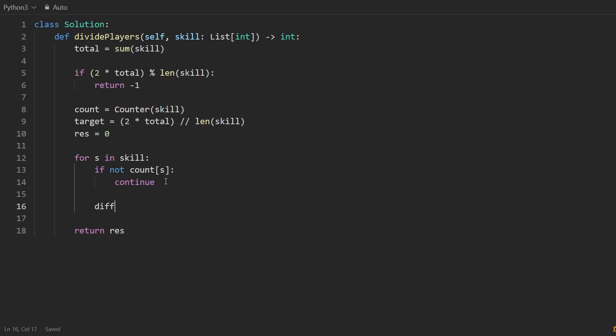Otherwise, we need to find a matching pair. And to do that, we need to get the diff of this element with the target. So target minus s, that gives us the diff. Now, we want the count to be non-zero. But if it is zero, if not count of the diff, or maybe the diff just doesn't exist in the hash map at all, in that case, we can also return negative one. In either case, return negative one. Otherwise, we can update our result by adding to it the product of s and the diff, the two elements that make up the pair. And then we can update the count of each element. So decrement that by one, and decrement the diff count by one. So this is the entire solution.